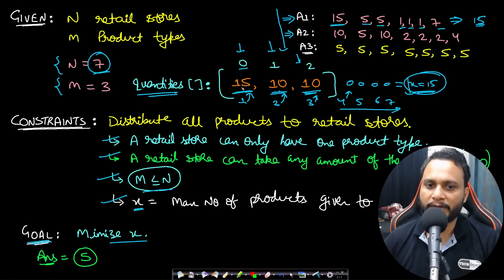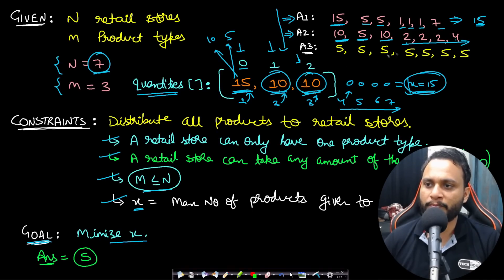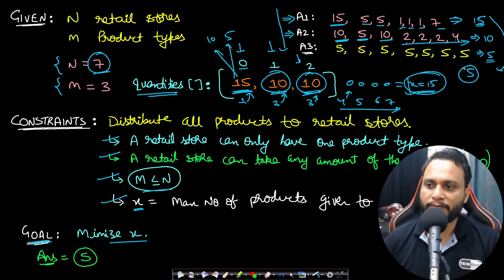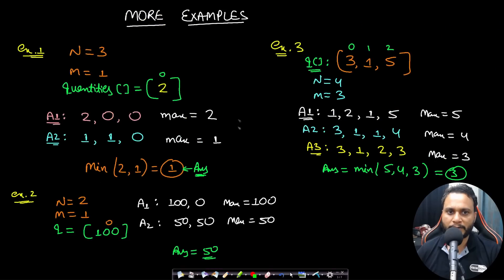In another assignment, the first product type is broken into 10 and 5 going to stores 1 and 2, the second product type goes to store 3, and stores 4–7 get 2, 2, 2, 4 from the third product type — giving a max value of 10. In the third assignment the max value is 5. Out of all these max values we track the minimum, which is 5, and that is the answer.